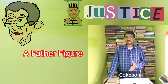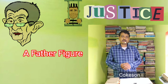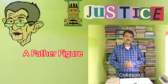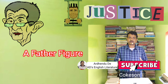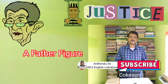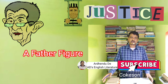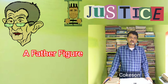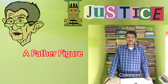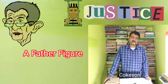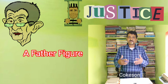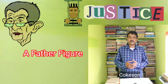In Galsworthy's 'Justice', Coxon, the head clerk of the law firm, is a good-natured person but has his own limitations. As a member of the lower middle class, he understands Falder and feels for him, but cannot go against his employer. He fittingly remarks at the end, when Falder dies, that a little bit of humanity might have saved a life.